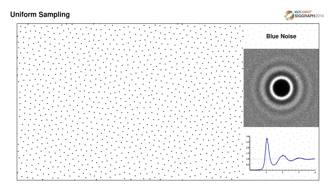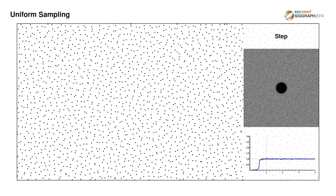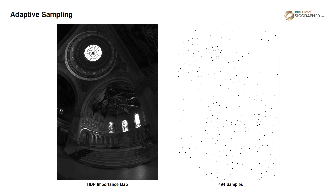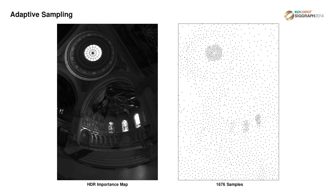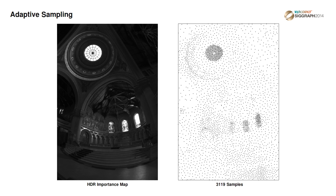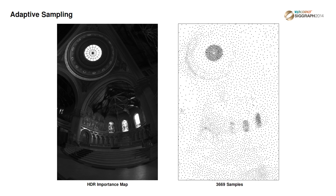Here are a few results produced using our sampling system. As you can see, our method is able to generate distributions for arbitrary target spectra, including blue noise, step function, and anisotropic distributions. Interactive speed is ensured by the hierarchical nature of the tiling system and the extensive use of precomputed lookup tables.